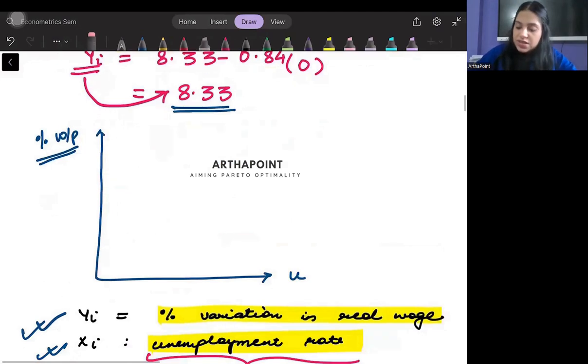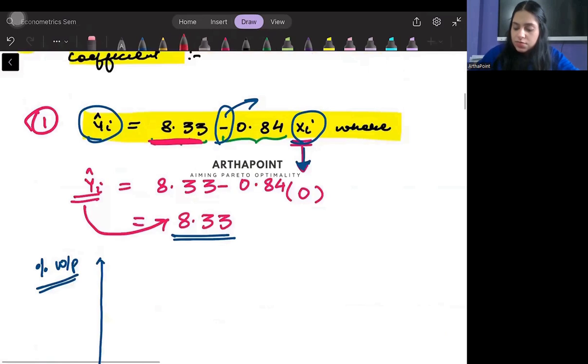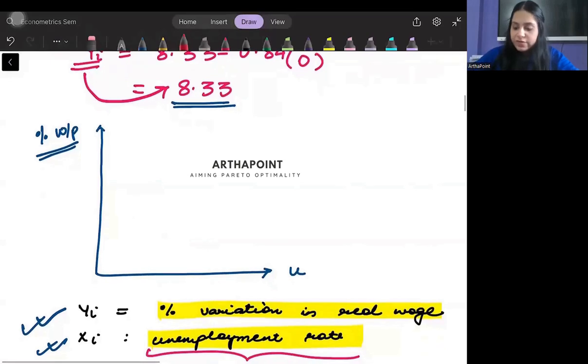So which means that if I were to go ahead and draw this curve, of course I won't be able to draw a curve like this because this is linear. This represents a linear line, so I cannot have a curve. I need to draw a linear line here. So I will notice here that this intercept will be 8.33.